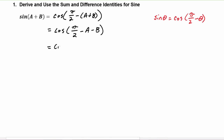This equals cosine of (pi over two minus a) minus b, where we used the associative property to put parentheses around the first two terms. Now we are going to apply the difference identity for cosine.